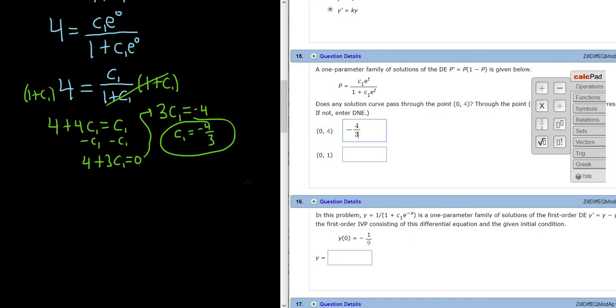Let's try (0,1). So I'm going to go ahead and write down the solution again since you can't see it on the screen. So it was P equals C1*e^T over (1 plus C1*e^T). So again, we have (0,1) this time. And just so I don't mess up, remember it's (T,P).